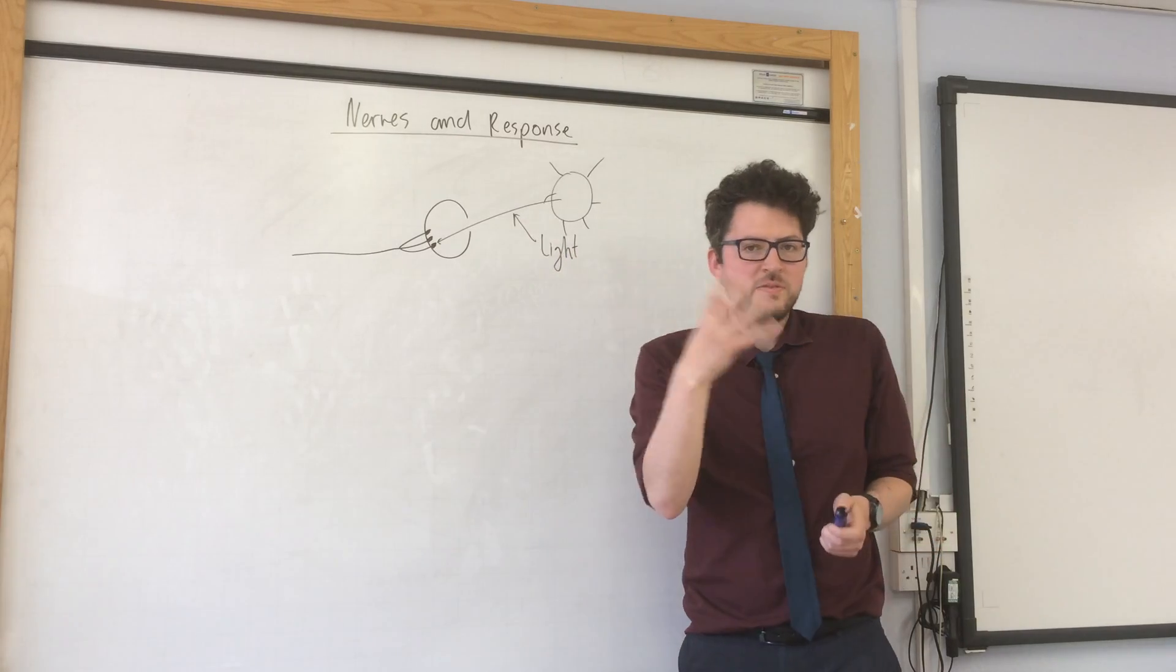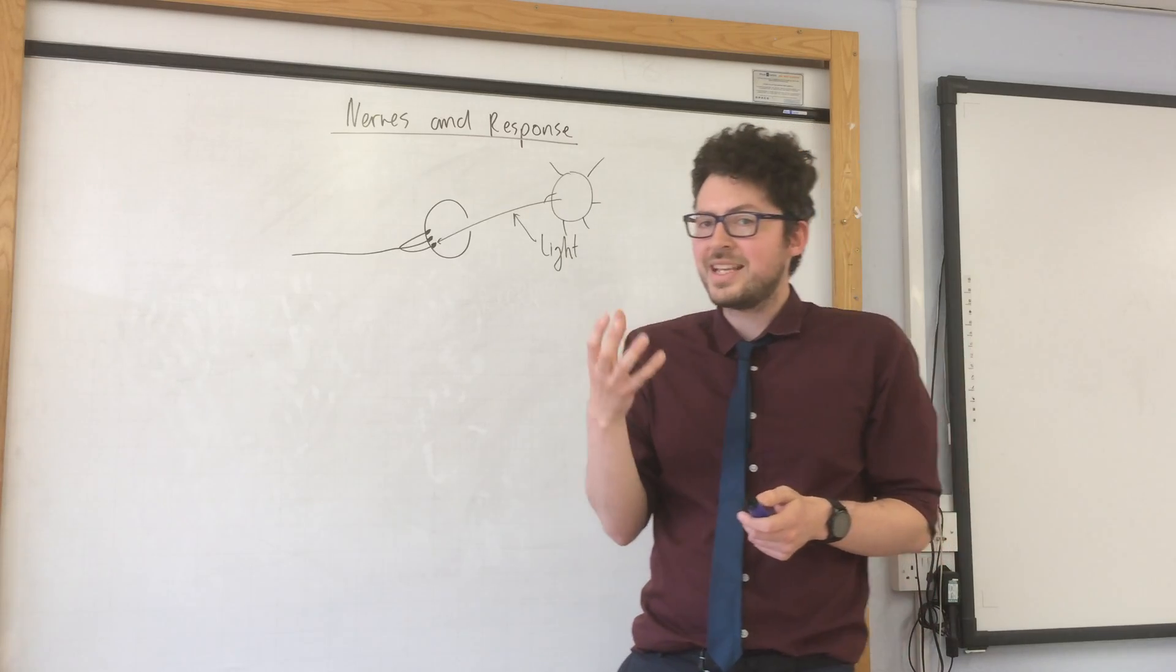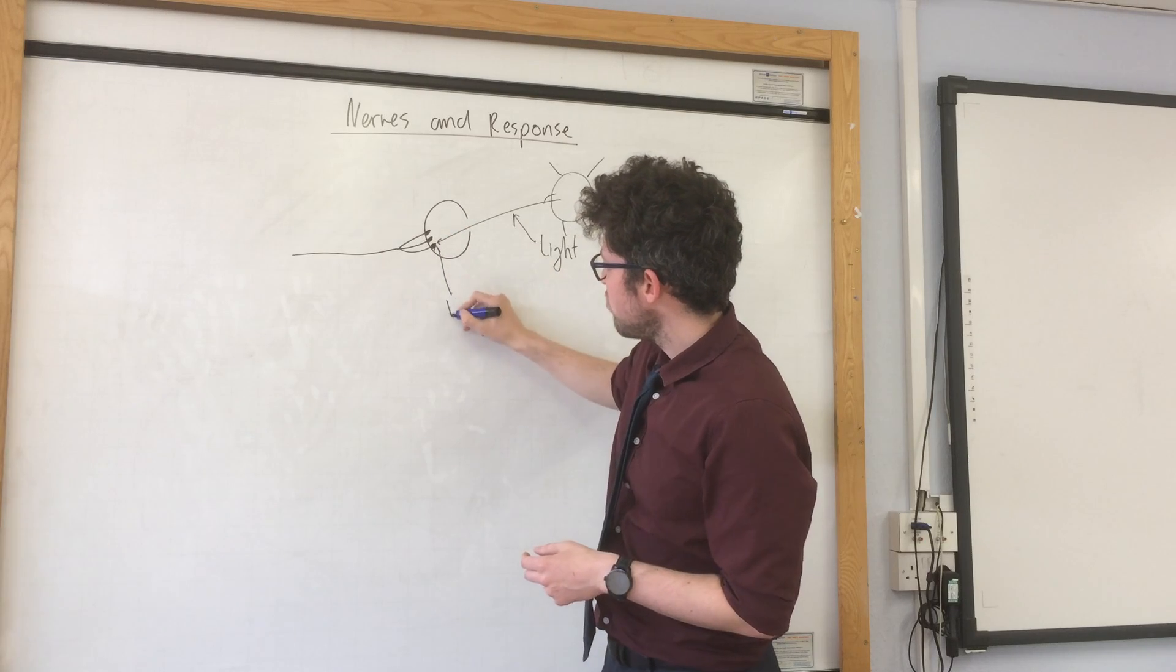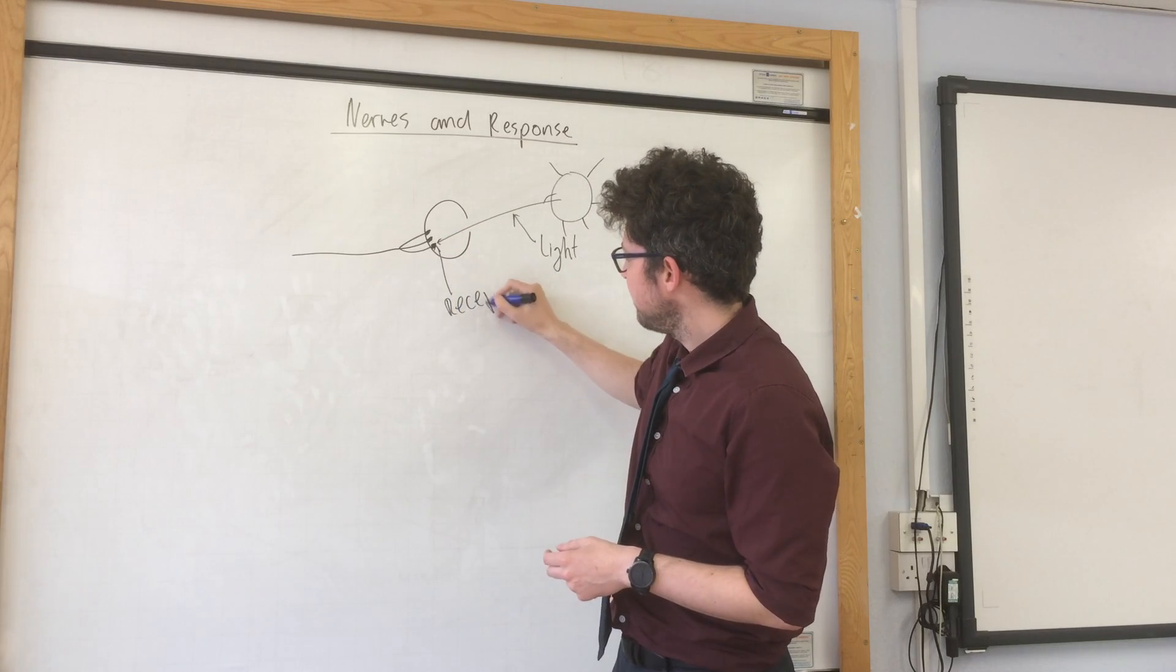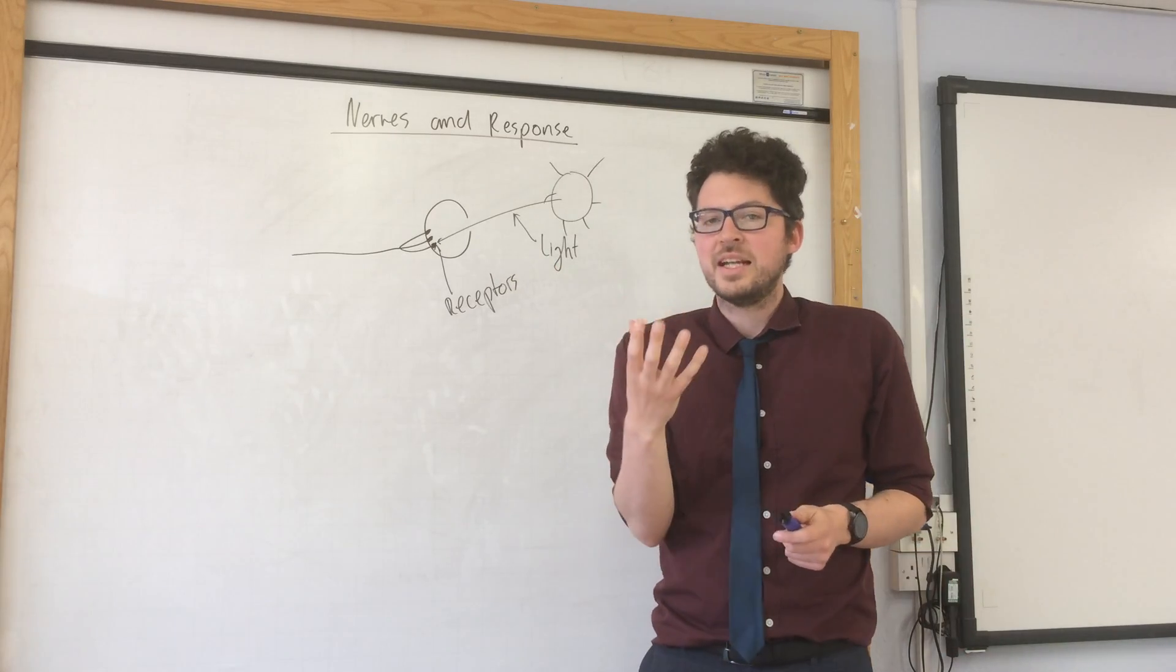In the human body or any animal's body, the way we detect light is with receptors in our eyes. So here we have receptors. Now the light reaches the receptors and stimulates them.